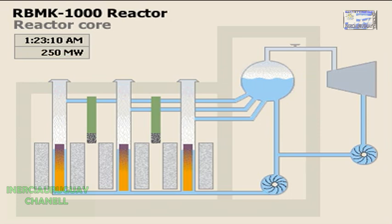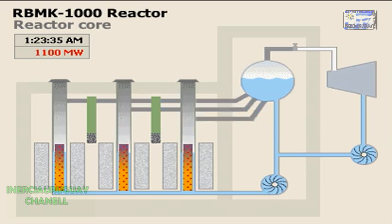Returning to the test procedure, the operators shut down steam to the single operating turbine generator. As the generator slowed, so did the cooling pumps. Inside the core, a buildup of steam was rapidly increasing the fission reaction. This generated yet more steam, which in turn generated more power. The reaction was now out of control.